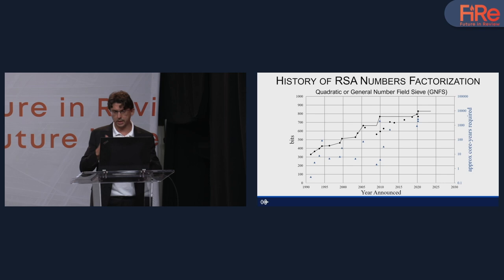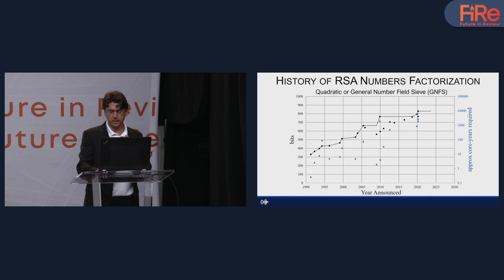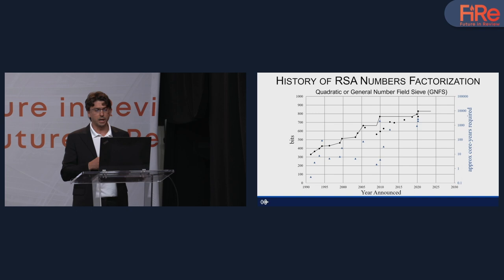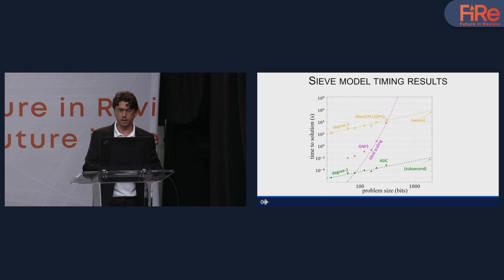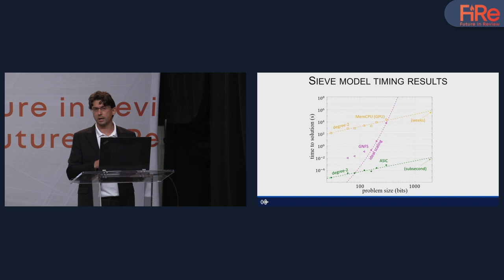This method scales quite badly — even though it's better than others, it scales essentially exponentially. To crack 800 bits took about 2,000 to almost 3,000 years equivalent in CPU core processing. We have applied our technology to these problems of finding the congruences to crack RSA, in a project supported by the U.S. Air Force.